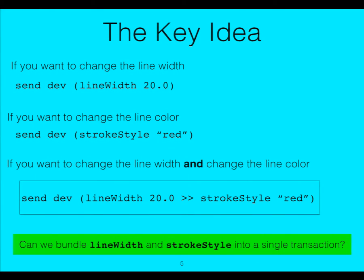Here's the problem: if you want to change the line width and change the color, using the monadic constructs we have, you can bundle them together and try to do both things at the same time. What we want to explore is the ability to take monadic computations, jam them together into bundles, and send these bundles together so we amortize the cost of talking to some sort of remote device or remote location.